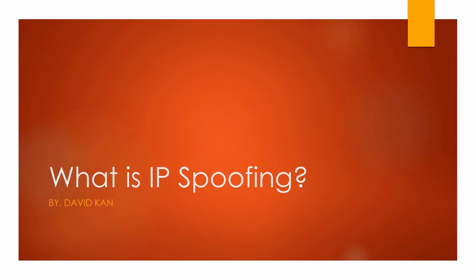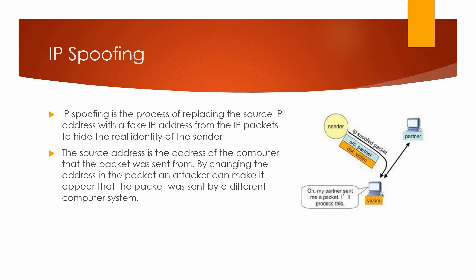For this lesson I'm going to cover what is IP spoofing. IP spoofing is the process of replacing the source IP address with a fake IP address from the IP packets to hide the real identity of the sender. The source address is the address of the computer that the packet was sent from. So by changing the address in the packet, an attacker can make it appear that the packet was sent by a different computer system.